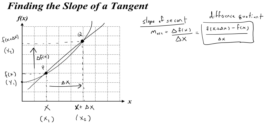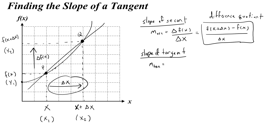What we're going to do is conceptually apply our idea: if we bring point Q closer and closer to point P, thereby shrinking delta x, we get the slope of a tangent line. The slope of the tangent line will equal the slope of the secant line when delta x is so small that it is zero.